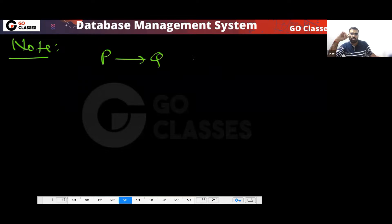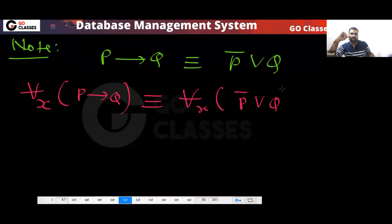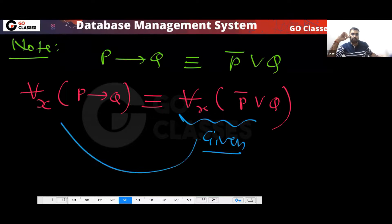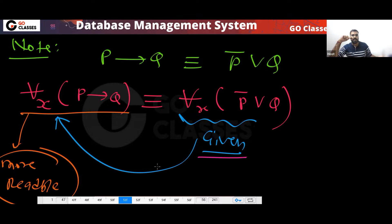You know that P implies Q can be written as P̄ ∨ Q. So the same thing they will do — in the GATE exam they will write 'for all x, P(x) implies Q'. That is what they will give you. So what you will do is translate it into P̄ ∨ Q form, because this is more user-friendly and more readable. Remember, you convert this — they will give you the implication form, so you have to convert it.